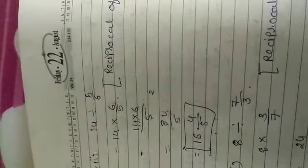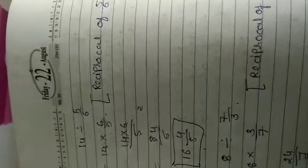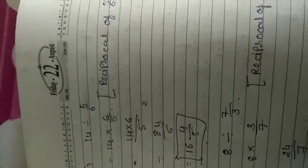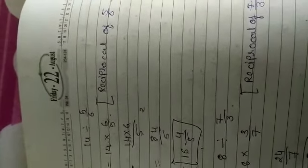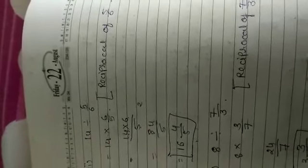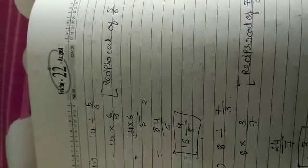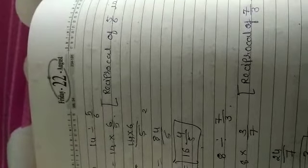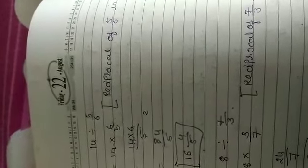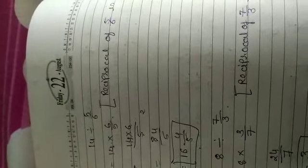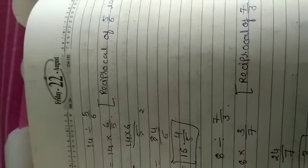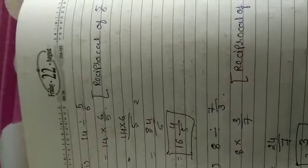Now, we will see the second one. 14 divided by 5 upon 6. Whenever we use their reciprocal, reciprocal always use after division, whatever fraction or number is there. Before number or fraction, we cannot change anything. 14 will keep as it is. After divide 5 upon 6, reciprocal of it is 6 upon 5. And division sign will convert into multiplication. Now, 14 multiplied by 6 upon 5 equals 84 upon 5. The answer is 16 and 4 upon 5.